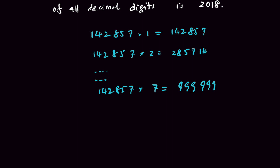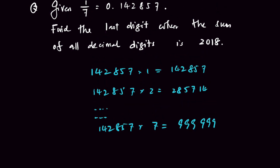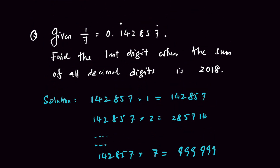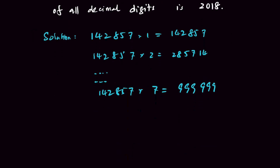Let us go back to the question. I want to know when the sum is 2018, which number do we stop at? After understanding the first cyclic number, the question can be rephrased as: at which digit position does it stop when the sum is 2018? So: 1 + 4 + 2 + 8 + 5 + 7 equals 27.